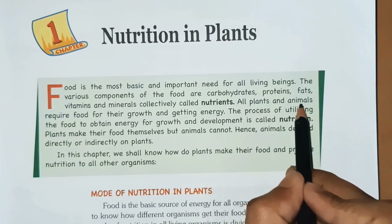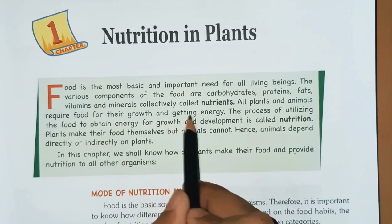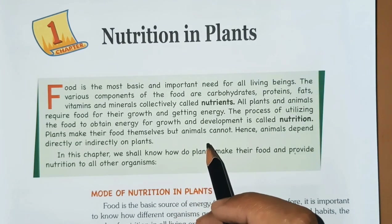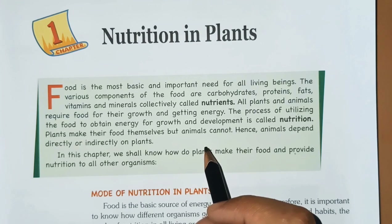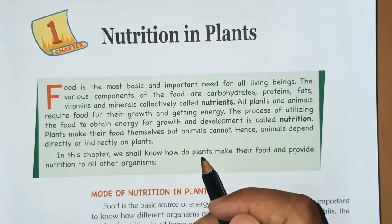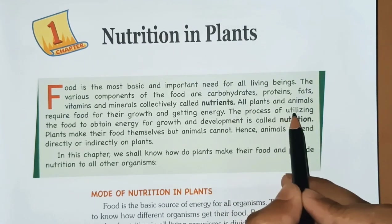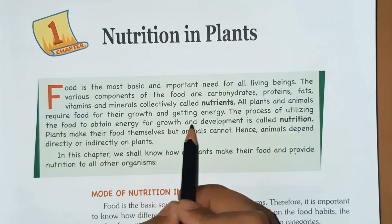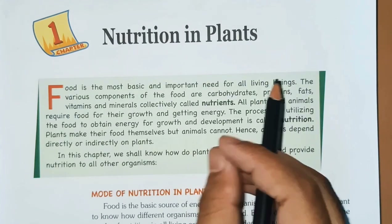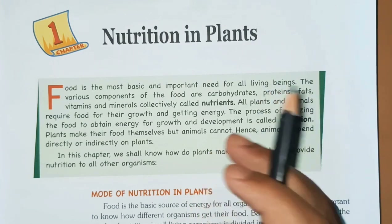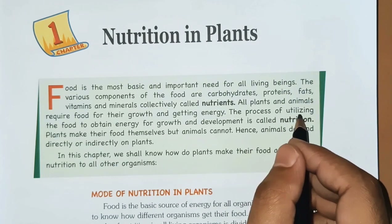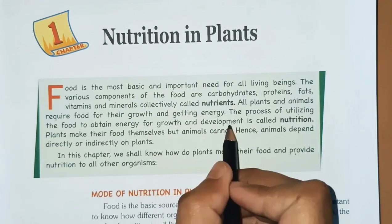All plants and animals require food for their growth and getting energy. Carbohydrates provide energy, so they are called energy sources. Proteins are responsible for growth and development of the body, so they are called body-building food. The process of utilizing food to obtain energy for growth and development is called nutrition. Nutrients are the basic components present in food useful for growth, development, and providing energy.